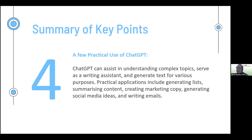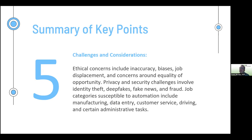Four: ChatGPT can assist in understanding complex topics, serve as a writing assistant and generate text for various purposes. Practical applications include generating lists, summarizing content, creating marketing copy, generating social media ideas and writing emails. Five: Ethical concerns include inaccuracy, biases, job displacement and fears about AI's impact on critical thinking. Privacy and security challenges involve data theft, deepfakes, fake news and fraud. Job categories susceptible to automation include manufacturing, data entry, customer service, driving and certain administrative tasks.